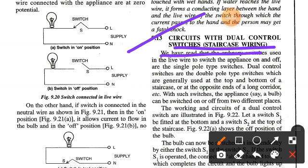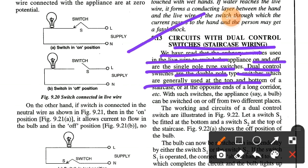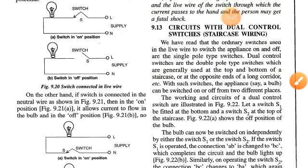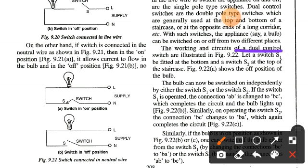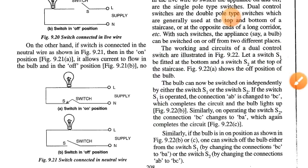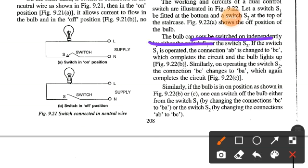Circuit with dual control switches — that is, staircase wiring: the ordinary switches used in the live wire are single pole type. Dual control switches are double pole type switches generally used at the top and bottom of a staircase or at opposite ends of a long corridor. With such switches, an appliance such as a bulb can be switched on and off from two different places. Let switch S1 be fitted at the bottom and S2 at the top of the staircase.